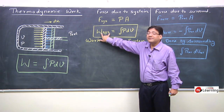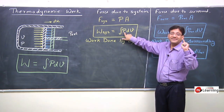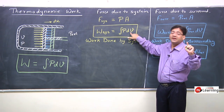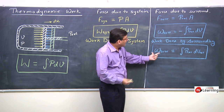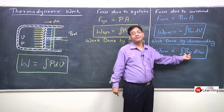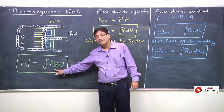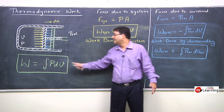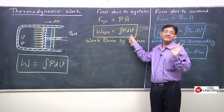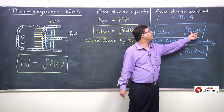Since dV_system = −dV_external, we can also write work done by surrounding as: W_surrounding = ∫P_external · dV_external. Ultimately, one would always conclude that thermodynamic work is always equal to ∫P dV — whether for the system (integral of P dV with system pressure and system volume) or for the surrounding (integral of P_external dV_external with surrounding pressure and surrounding volume change).